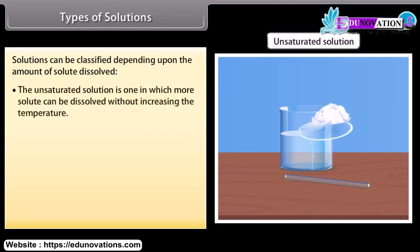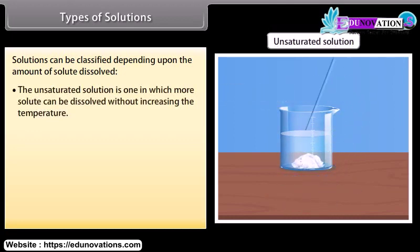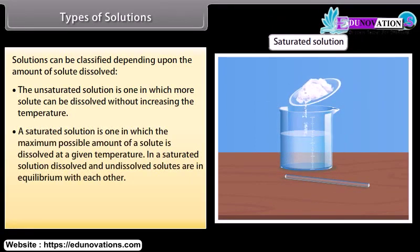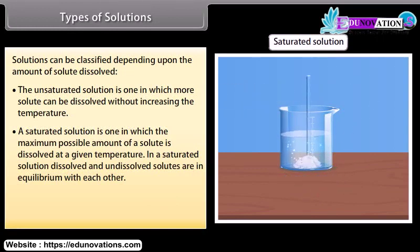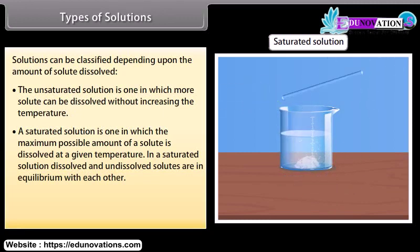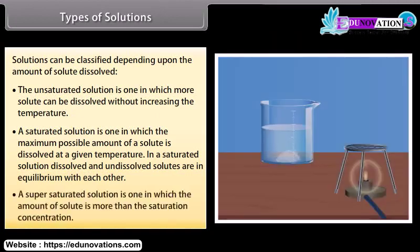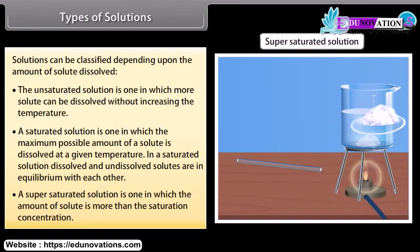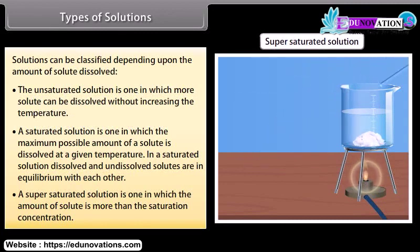Solutions can be classified depending upon the amount of solute dissolved. An unsaturated solution is one in which more solute can be dissolved without increasing the temperature. A saturated solution is one in which the maximum possible amount of solute is dissolved at a given temperature; the dissolved and undissolved solutes are in equilibrium with each other. A supersaturated solution is one in which the amount of solute is more than the saturation concentration.